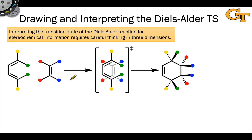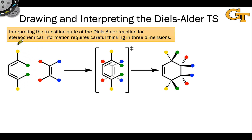The key to understanding stereochemistry in the Diels-Alder reaction is to think deeply about the spatial positions of groups in the transition state and how those translate into spatial positions in the product. Before we analyze the transition state, let's define the differently colored groups. The groups in yellow are outside of the C shape formed by the diene in the S-cis conformation, so we'll refer to them as 'out.'